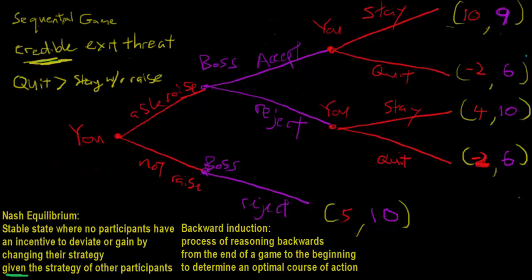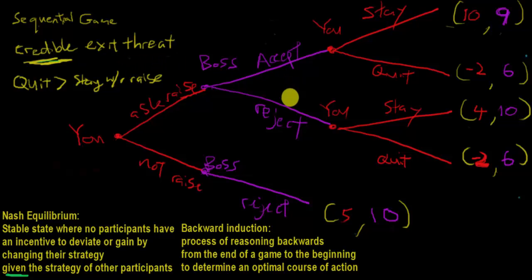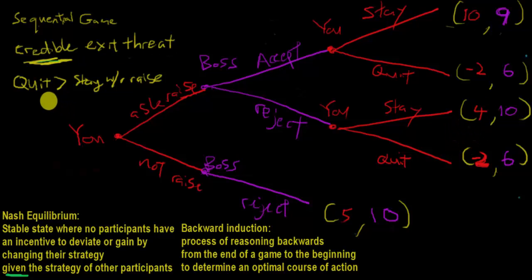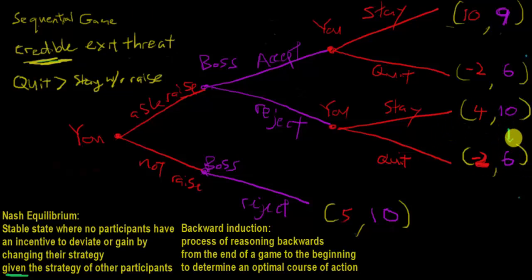Now I want to show you how to take specific steps to achieve the Nash equilibrium you actually want. Central to that is having a genuinely credible exit threat — and I don't mean simply telling your boss you'll quit. He won't believe you given our assumptions. Instead, by showing that quitting is actually better than staying without a raise, you prove to your boss that if he rejects you, you will be unable to stay on, leading him to an inferior outcome.